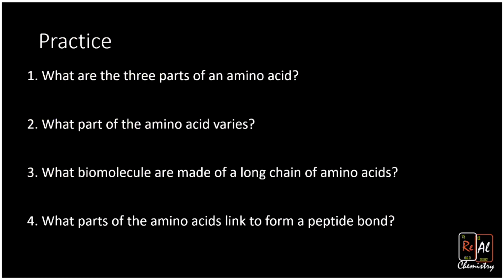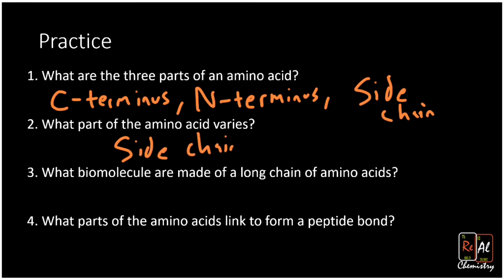Now let's do a little practice to make sure that we've understood what we've learned. What are the three parts of an amino acid? Well, they're the C-terminus. Remember that one is the carboxyl group. The N-terminus, that one has the amine group. And then lastly, we have our side chain. So those are the three basic parts of an amino acid. What part of the amino acid varies? Well, that's the side chain. The side chain is the thing that can change, whereas the N-terminus and C-terminus are on every single amino acid.